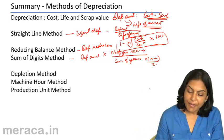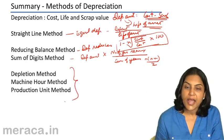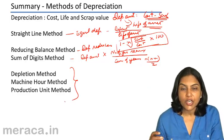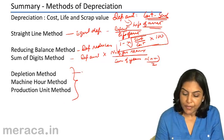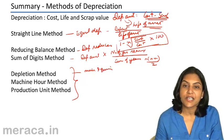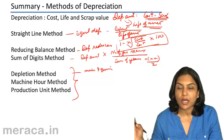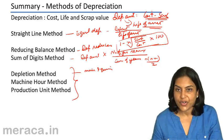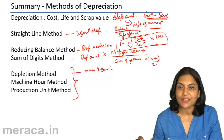Other methods discussed were the depletion method, machine hour method, and production unit method, all of which vary depending on the usage of the machine. The depletion method is normally used in mines and quarries, where a depreciation rate is computed based on the estimated total deposits to be mined or extracted, and this rate is then applied depending on the amount of extraction.